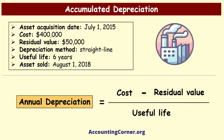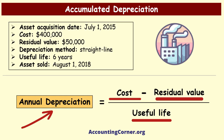Let's find the solution. First, let's check how to calculate annual depreciation. Annual depreciation is determined using the formula: cost minus residual value, divided by useful life. This formula is used when the straight-line depreciation method is being applied.